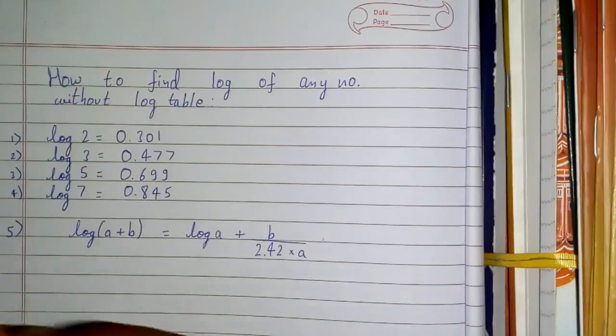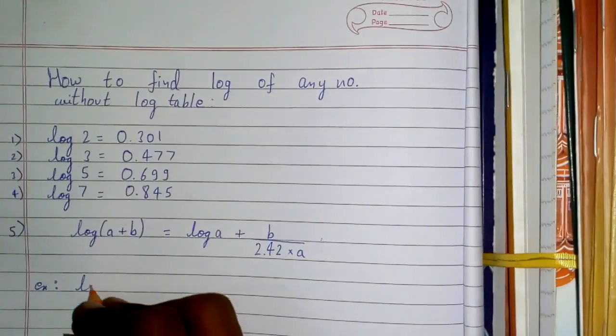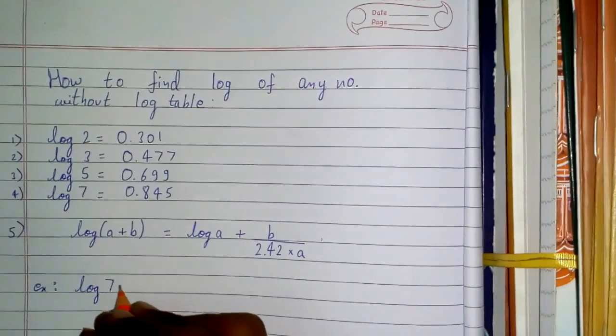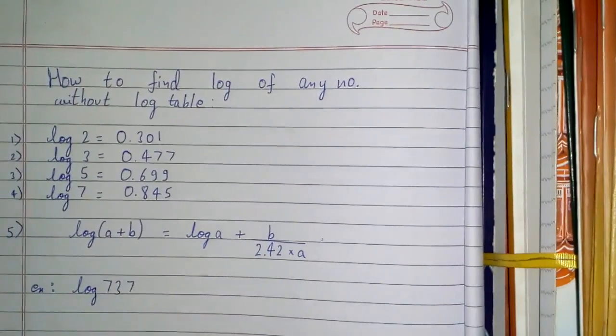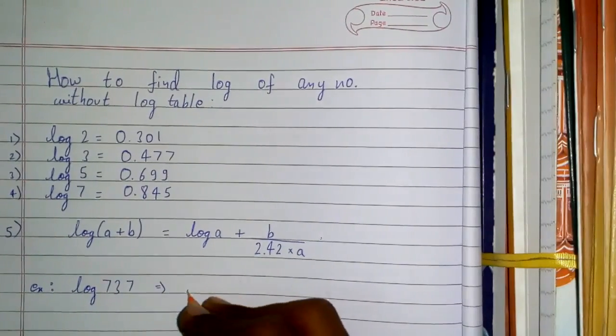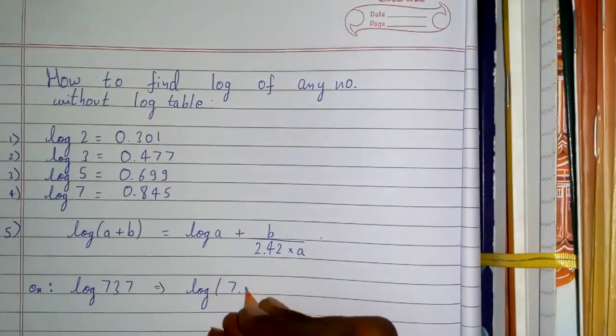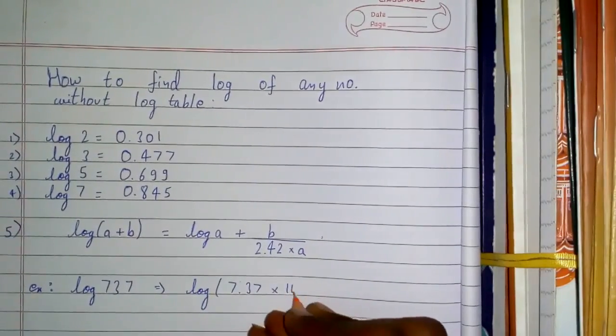Let's take an example. Suppose we need to find log 737. You can break 737 into two parts: 7.37 × 10².